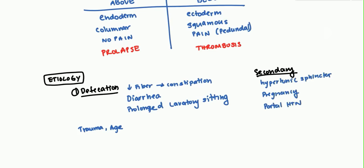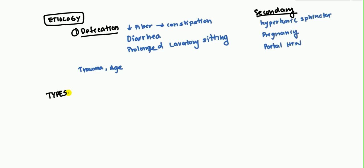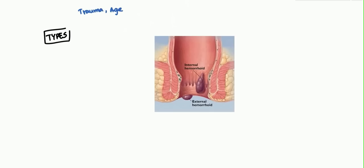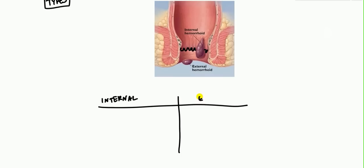Now let's look at the different types. In the diagram, here's the pectinate line. Hemorrhoids above the pectinate line are internal hemorrhoids, and below and outside the anal canal are external hemorrhoids. In the internal area, we have structures called anal cushions, and in the external area, we have circumferential veins.